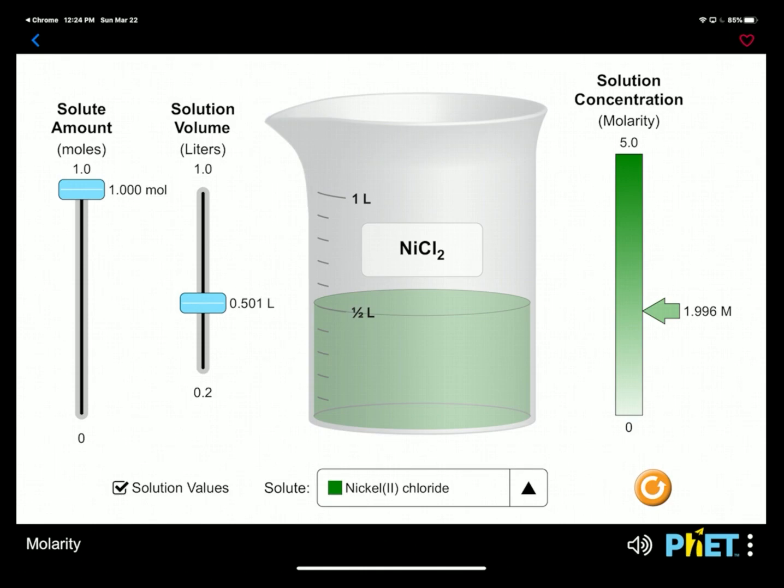Well, if we allow it to evaporate out and drop that number back down, say to 0.25, which would be half of that—it was two molar at a half a liter, so what would it be at 0.25? It should be twice as concentrated, right? It's the same amount of solute, the nickel chloride, but now that's held in half the volume. So one mole divided by 0.25 liters is going to give you right at four molar.